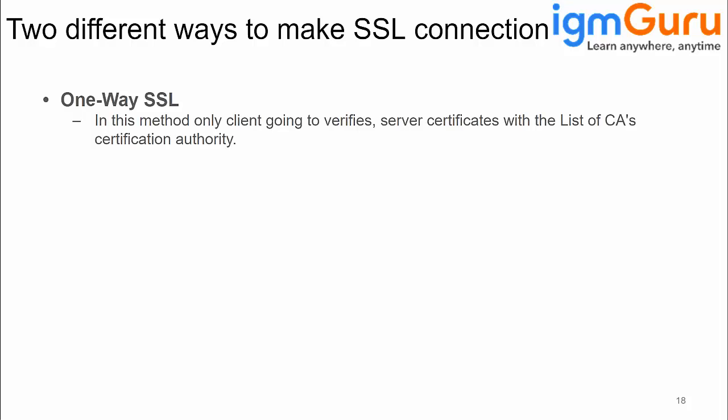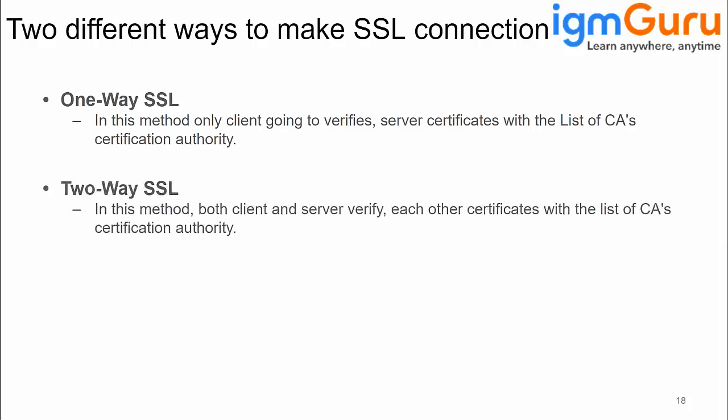How does it work? The server gives its certificate to the client, and the client checks it in its default trust store. If the certificate is there, then the client is confirmed it is connecting to the right person. Two-way SSL means the server also wants to know who is connecting to it — whether that person is authorized or not.